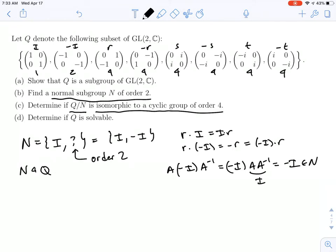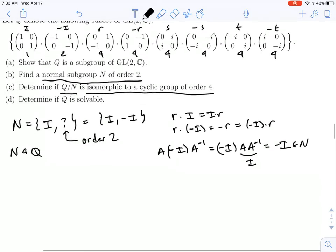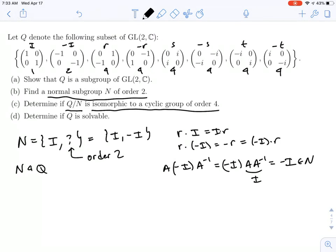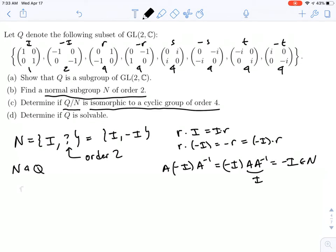All right, now we can try to look at the quotient group. The way we can do this very easily is to just write out the elements of the quotient. So the quotient is going to consist of cosets, right? It's going to look like something in Q times N. But N consists of the identity and minus the identity. So let's say I take the coset RN. This will be R times i, which is R, and R times minus i, which is minus R.